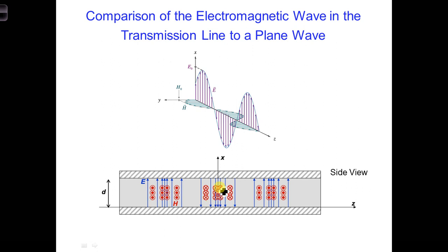So in between the two conductors, we have the same sort of electric fields as you have for a plane wave that's shown on the top here.